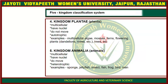The other kingdom is Plantae, which includes plants. They are multicellular, eukaryotic, they cannot move, and they are autotrophic. The highest complex organisms are Animalia, which are multicellular, eukaryotic, they can move, and they are heterotrophic in nature. Examples include Man, Bird, Frog. These are examples of the Kingdom Animalia.